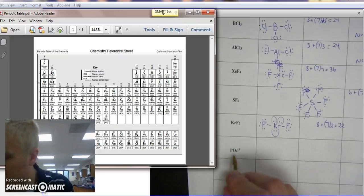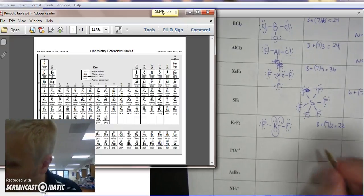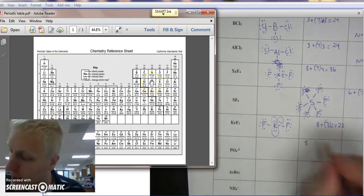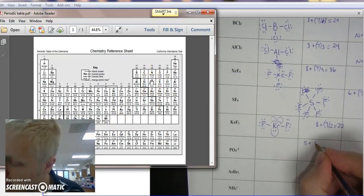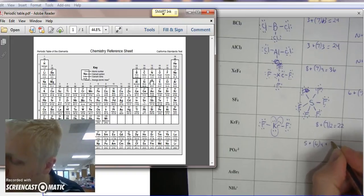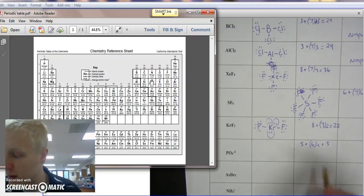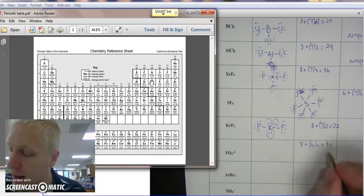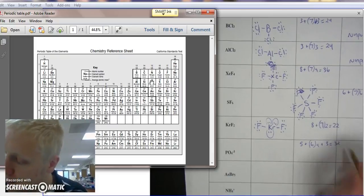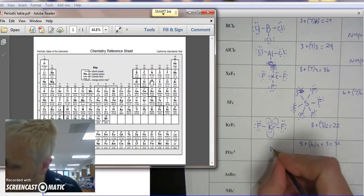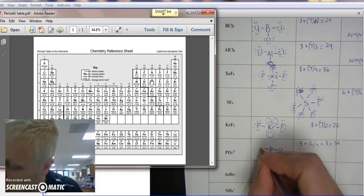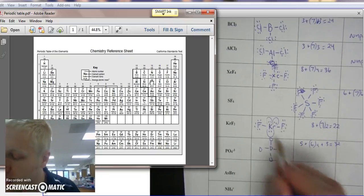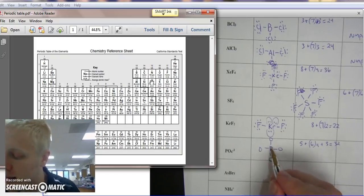All right. Doing another one. We have PO4 3-. So phosphorus is 5. It's in the same column as nitrogen, 5A. And oxygen has 6, and there's 4 of them, plus 3, because it's a minus 3. So that's 3 additional electrons. 6 times 4 is 24, plus 5 is 29, plus 3 is 32. Phosphorus each bonded to 1 bond to an oxygen, and there's 4 of them.